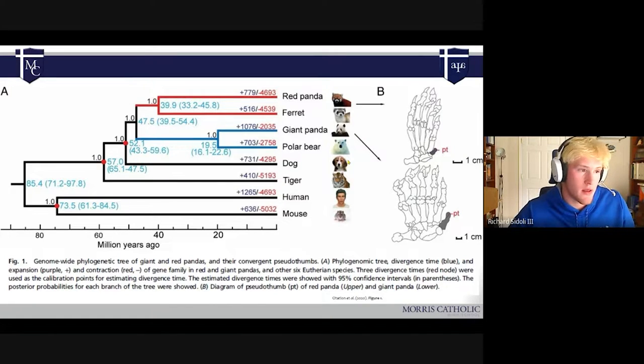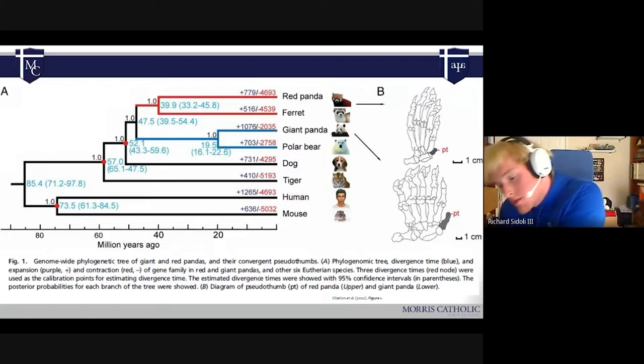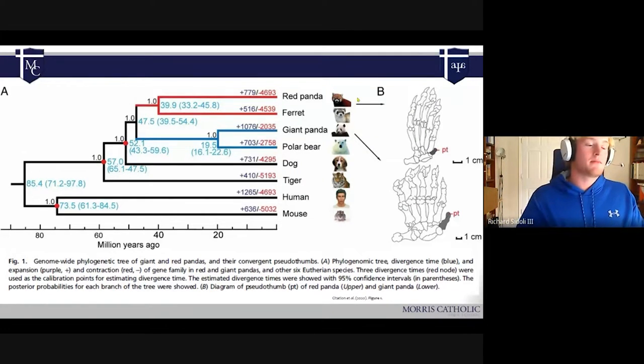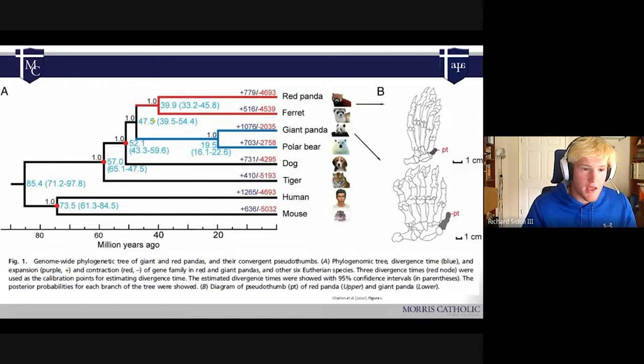This figure, this is figure one, which is showing the phylogenetic tree more detailed. This is giving you the actual times of the split and these numbers here, the plus and minus, supposedly refer to gene loss and gene gain. They call it an expansion and contraction.